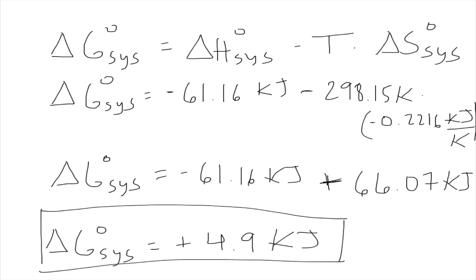One more question we could ask is whether this reaction is spontaneous or non-spontaneous, and if you know the terms exergonic and endergonic, those apply here too. In this case, when Delta G is greater than zero — positive — we get a non-spontaneous reaction, also called endergonic.